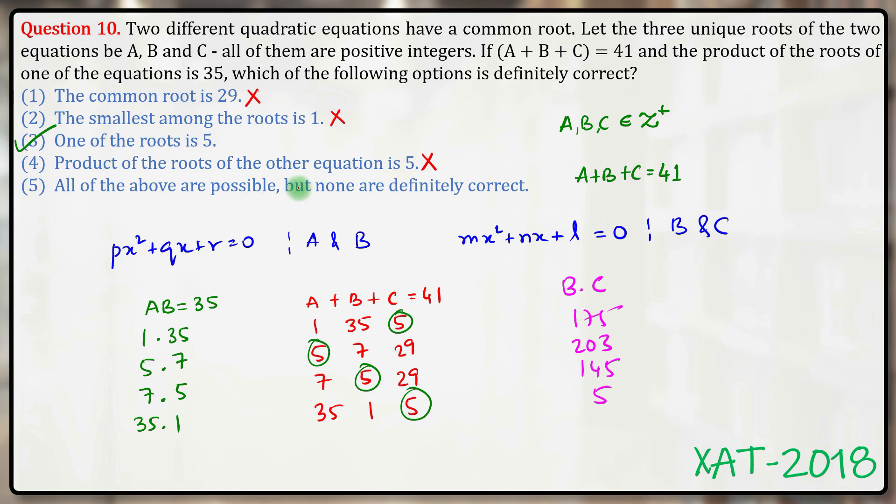So it is not necessary that the product of roots of the other equation is 5. All of the above are possible but none are definitely correct. No, this answer option is also wrong because we know that one of these is definitely correct. Hence the correct answer to this question is answer option 3.